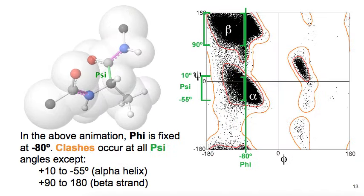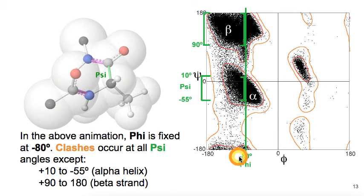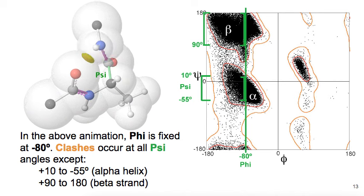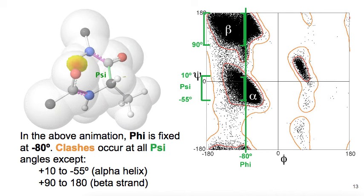Here is another animation in which we're rotating psi. In this animation, phi is fixed at minus 80 degrees. As you watch psi rotate, you see there are two regions with no clashes. The first one starts here and goes to here, and the second one is shorter, starting there and going to there.